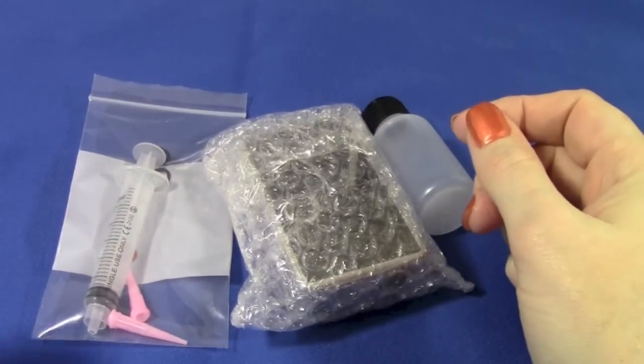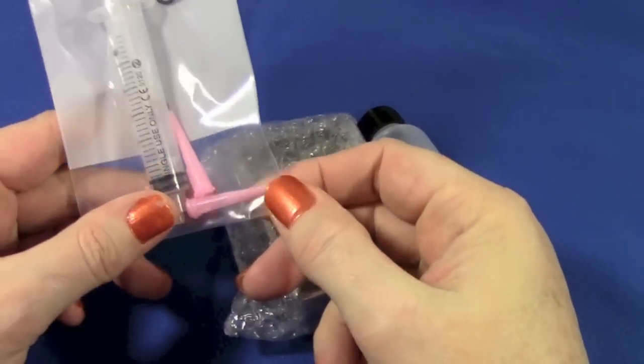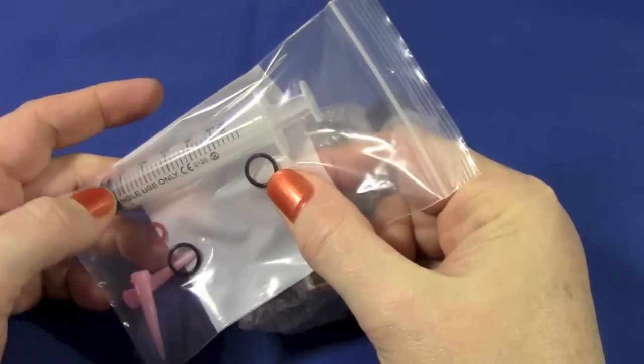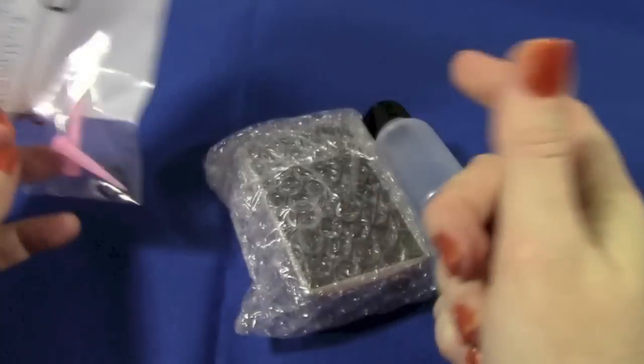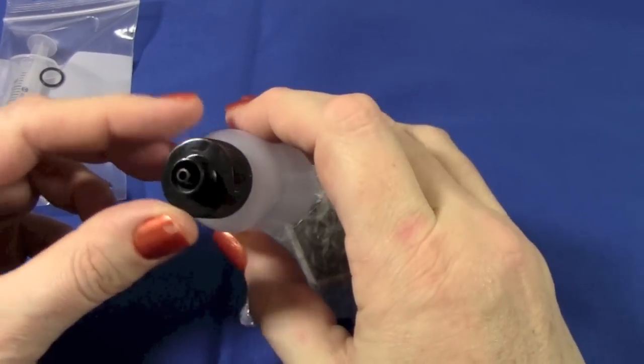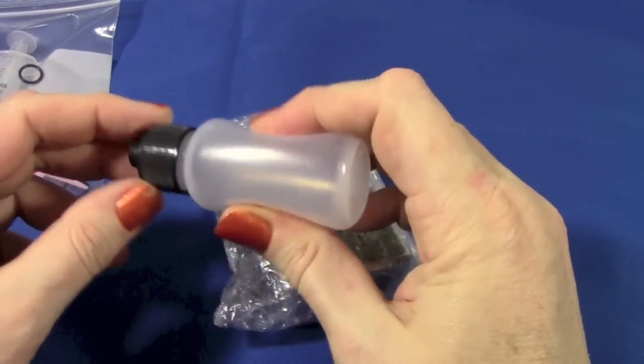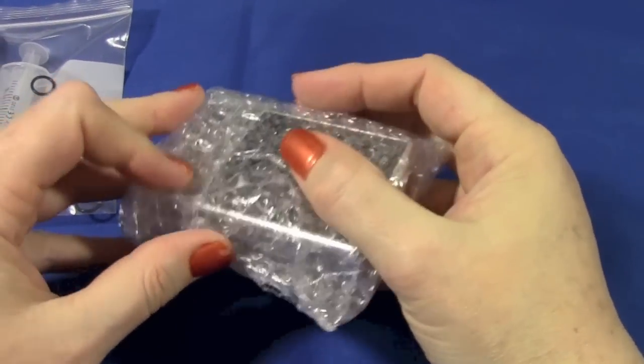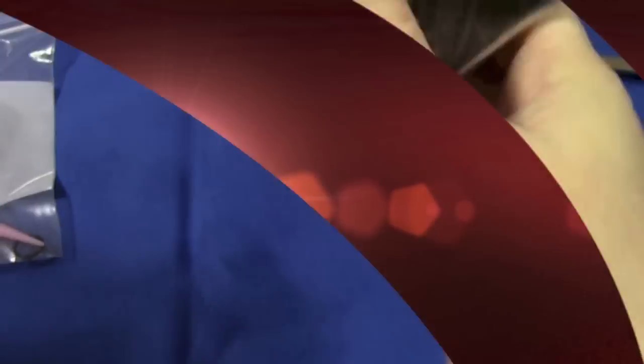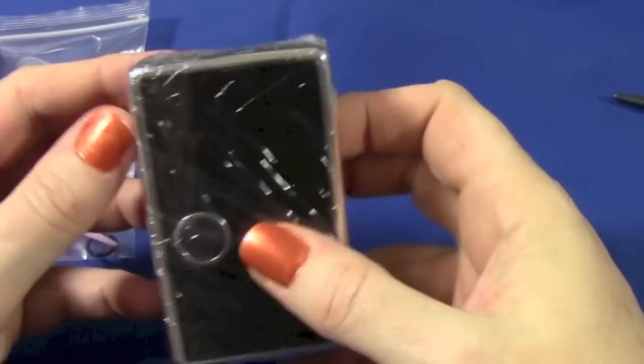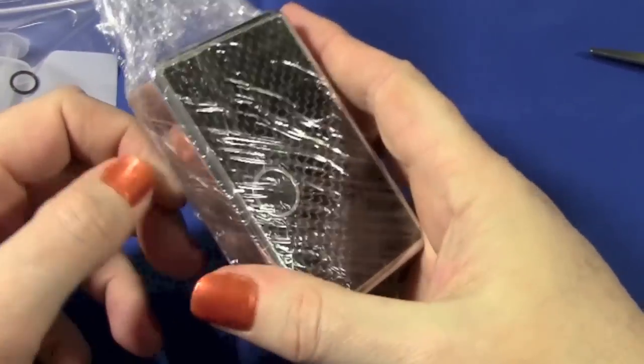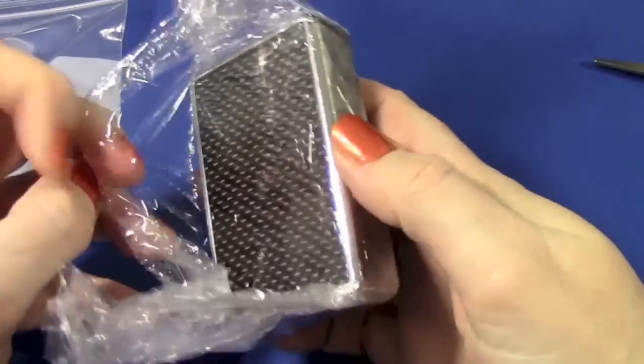Alright, let's take a look at what comes with the Billet Box. First of all, you get a syringe and some plastic filler tips and some extra o-rings, a bottle that will also take those plastic syringe tips for easy filling, and a very tightly bubble wrapped mod.